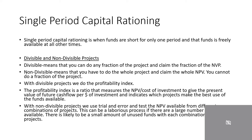With non-divisible projects, we use trial and error and test the NPV available from different combinations of projects. This can be a laborious process if there are a large number of projects available. There is likely to be a small amount of unused funds with each combination of projects.